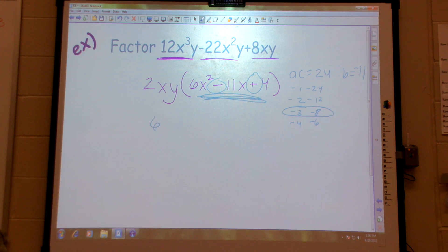So I have 6x squared minus 3x minus 8x plus 4. Line down the middle. What can I pull out of the front? 3x. All I'm left with? 2x minus 1.